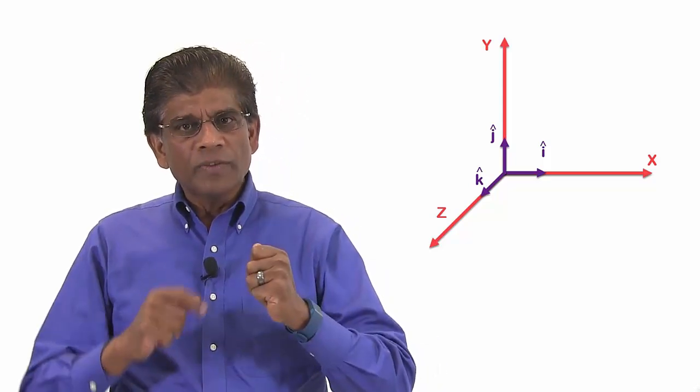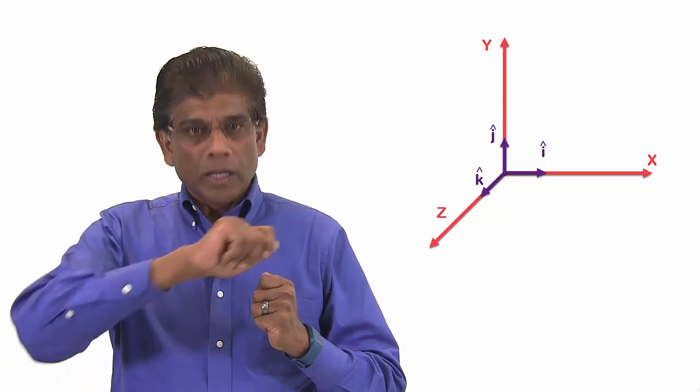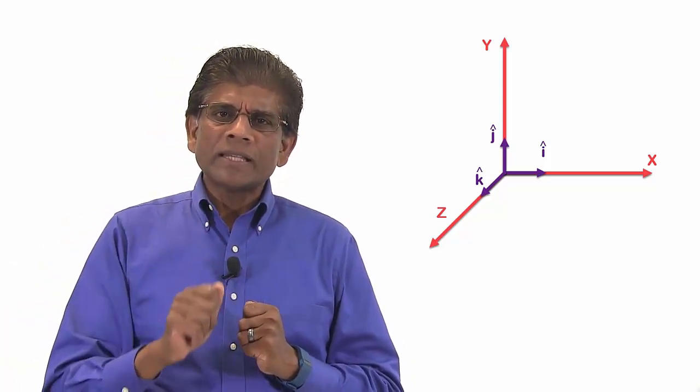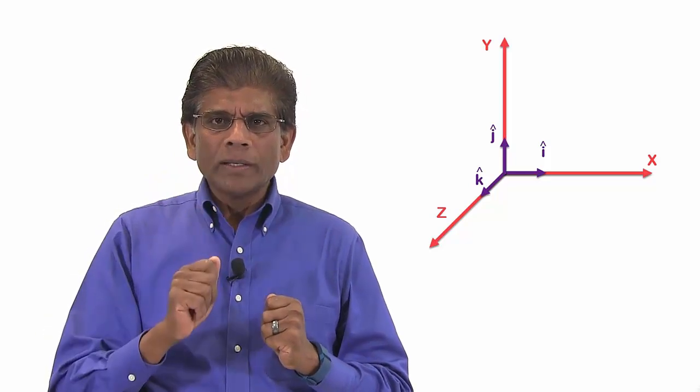vector i is a vector with a magnitude of 1 along the x direction. Please keep in mind, when I say the magnitude is 1, it means 1 in whatever units we are dealing with.